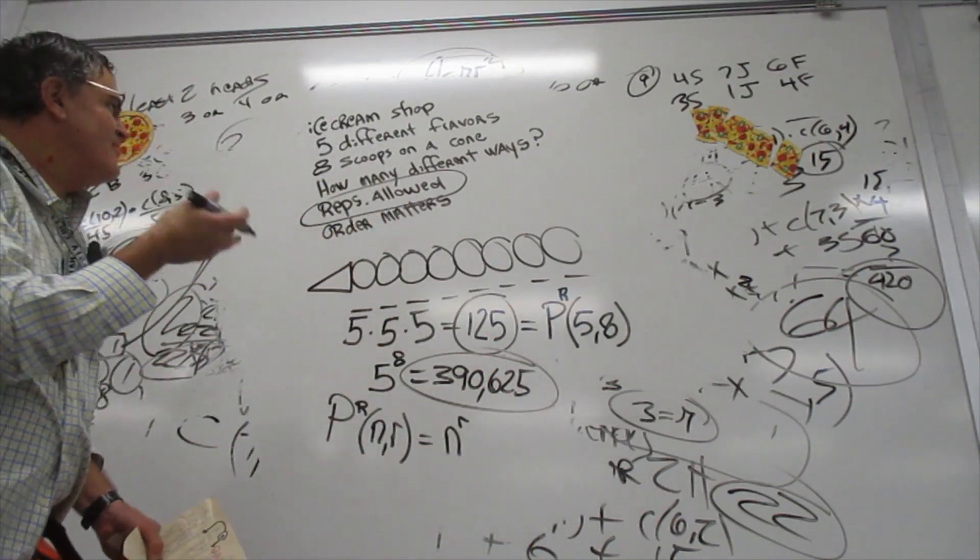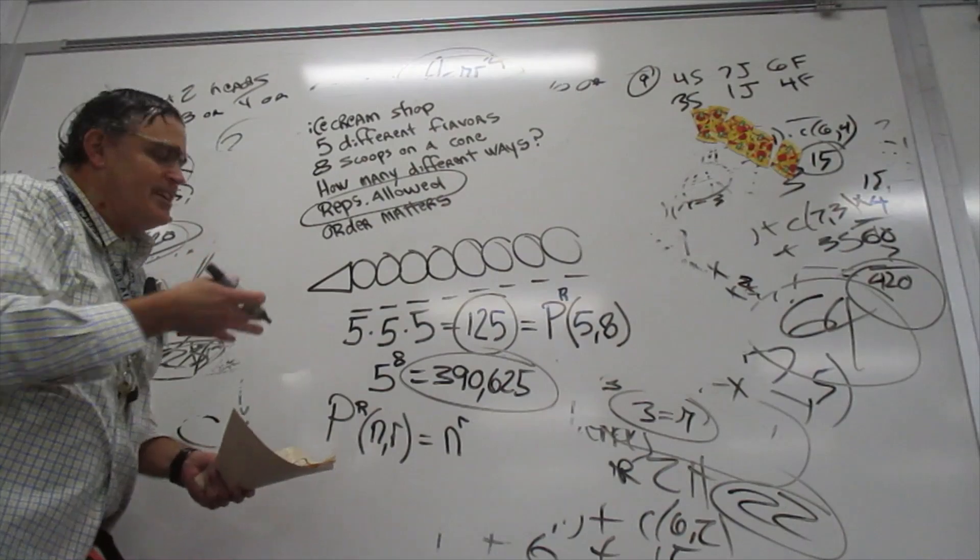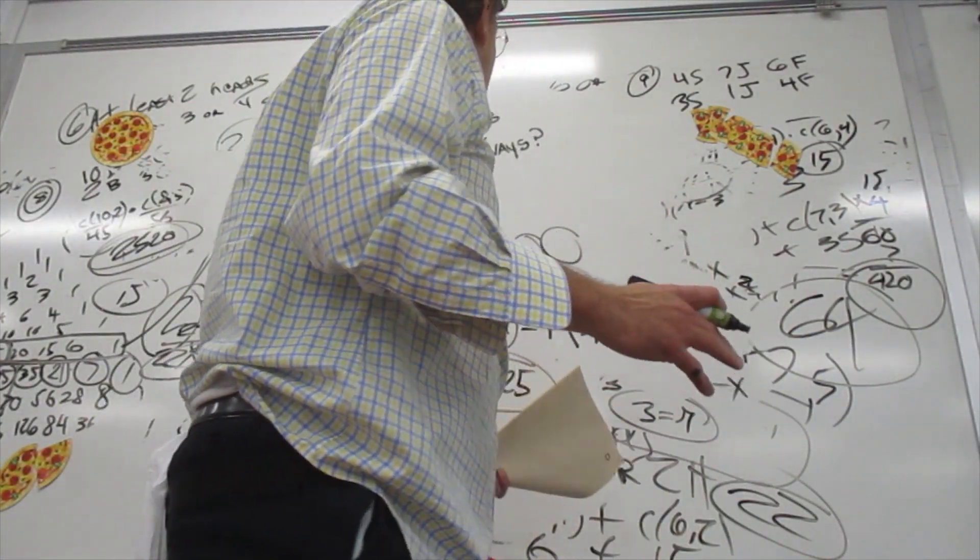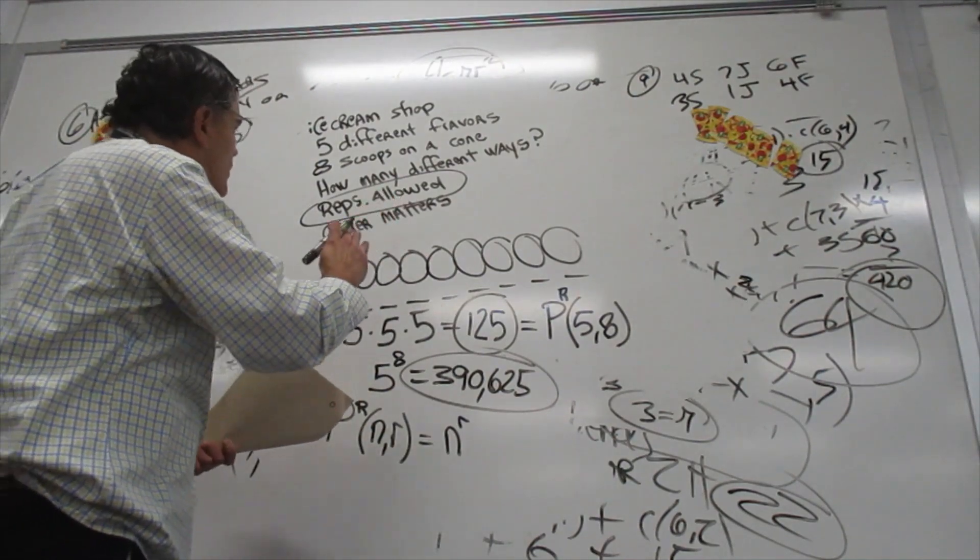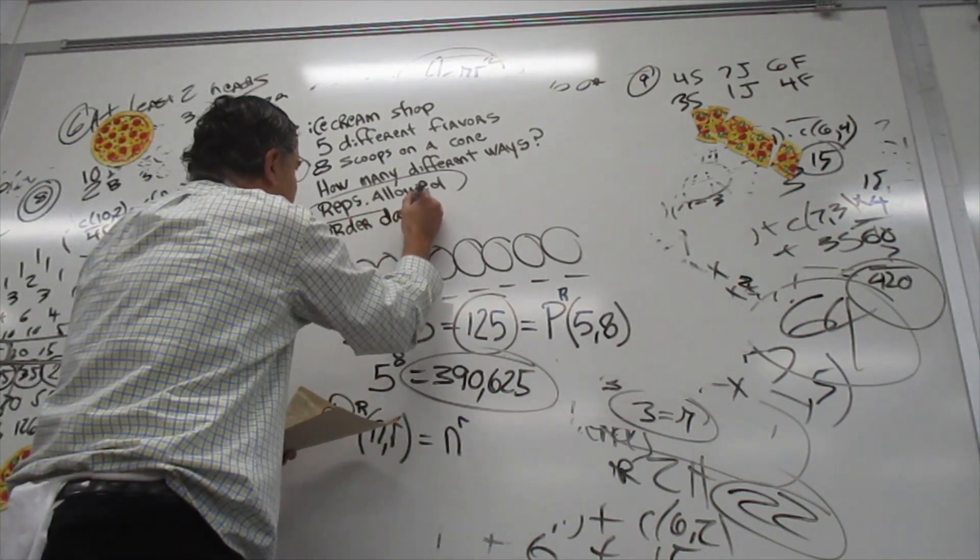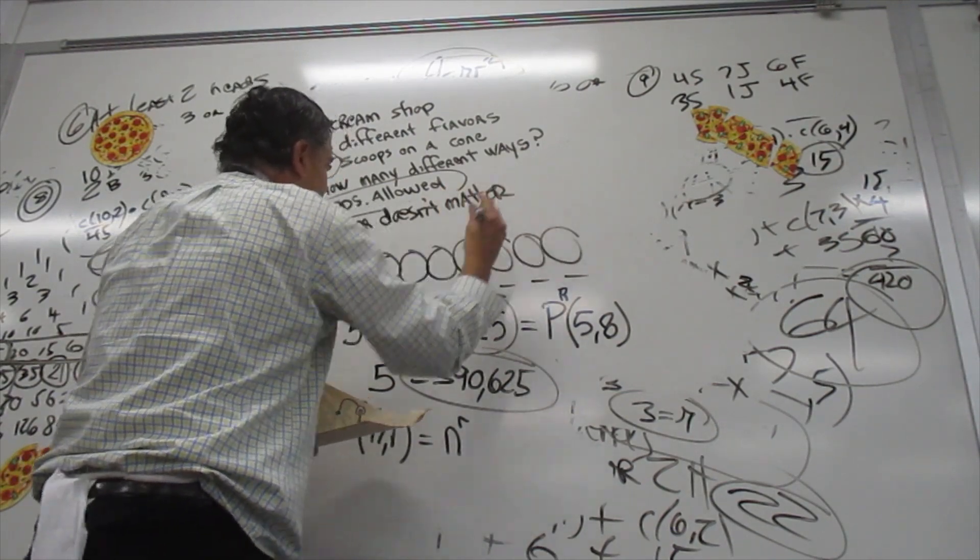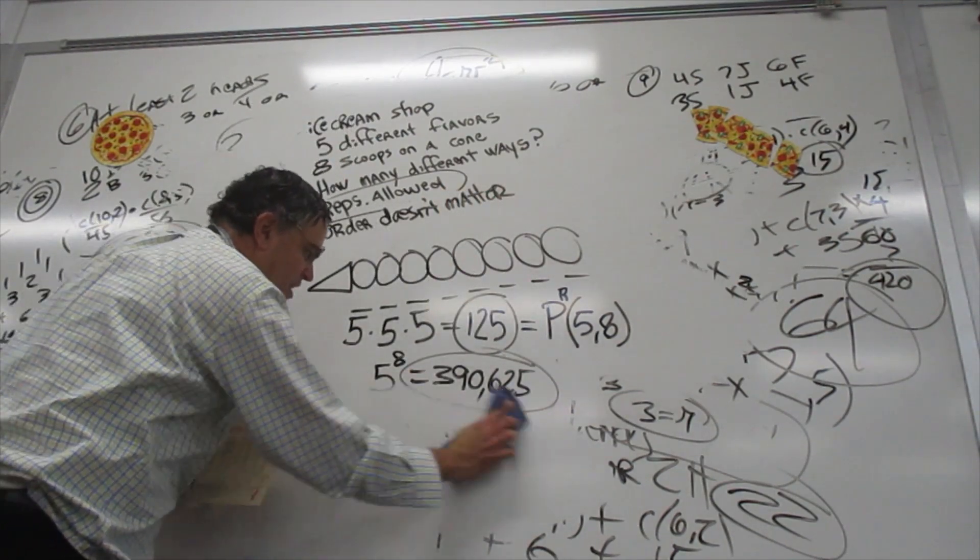So that is how you do permutations when reps are allowed. And now we're going to go ahead and change this problem where it says order doesn't matter. So we're going to get rid of all this.